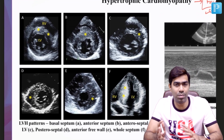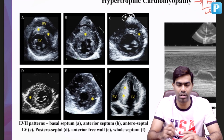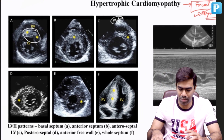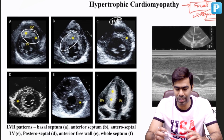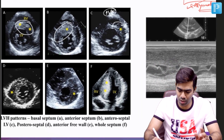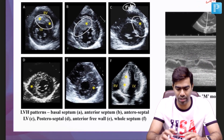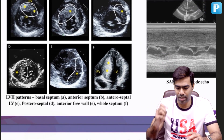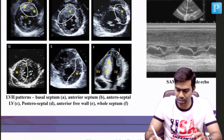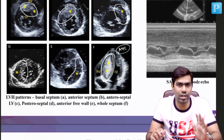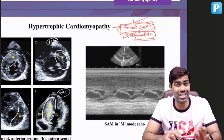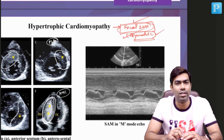Looking at this series of images from the parasternal short axis view at different areas: the first patient shows focal LVH in the basal septum; this patient shows focal LV hypertrophy in the anterior septum; this patient in the anteroseptal left ventricle; this patient in the posteroseptal left ventricle; and this patient in the anterior free wall. In this apical four-chamber view, the patient shows hypertrophy of the entire interventricular septum. Usually, more often than not, you will have a focal LVH, but seeing a symmetrical or concentric LV does not rule out HCM.